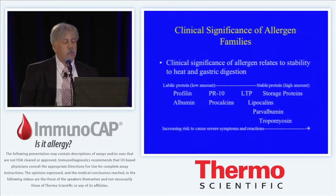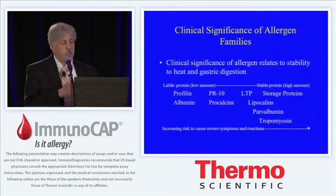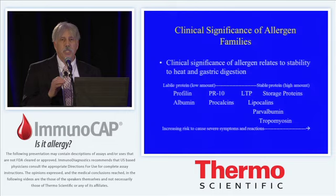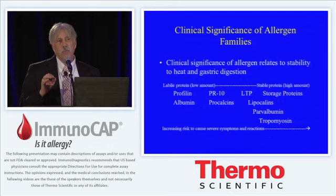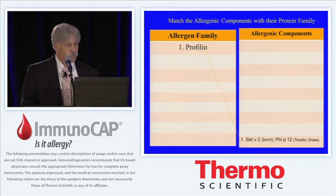I will approach the nine allergenic families systematically, going from those that are most labile or least likely to induce a severe allergic reaction, such as the profilins and albumins, to those that are most stable to digestion and heat, which are the lipocalins, the storage proteins, the parvalbumins, and the tropomyosins. Hopefully at the end, you will have some model allergen specificities you can link with each one of these families.